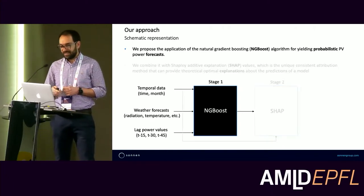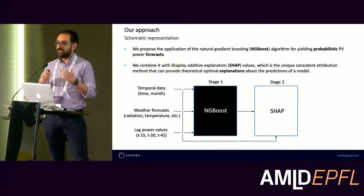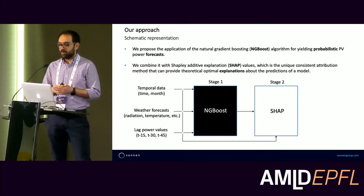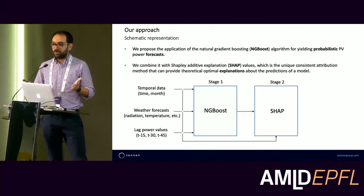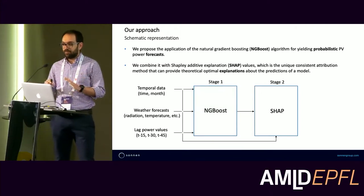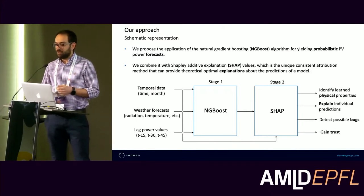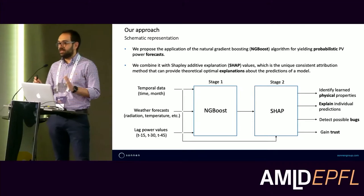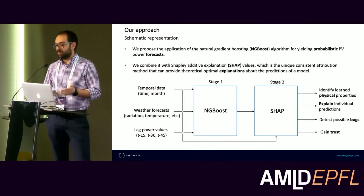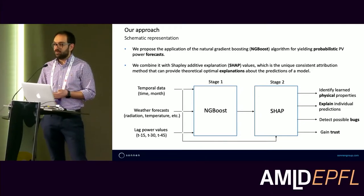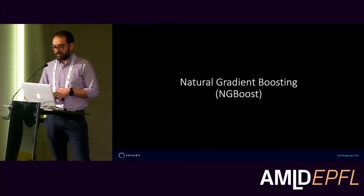In the second stage, we calculate the SHAP — SHapley Additive exPlanation — values, which represent the unique consistent way of providing explanations about model predictions. This allows us to decode the trained model, identify learned physical properties, detect possible bugs in our machine learning pipeline, and ultimately gain trust in the model.